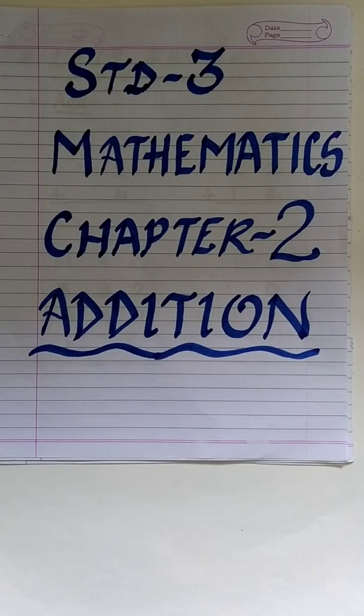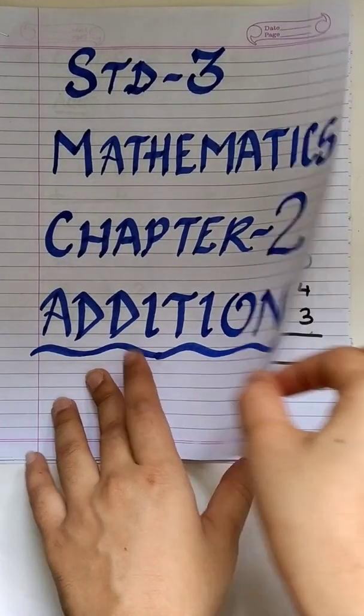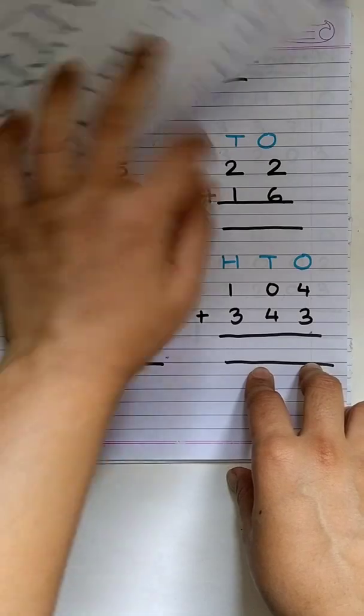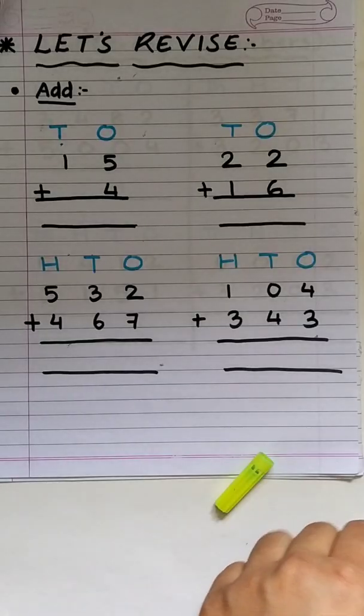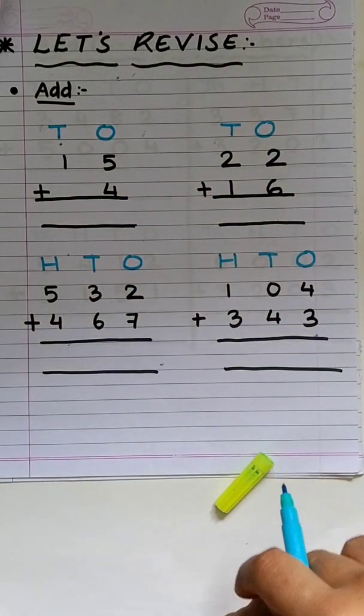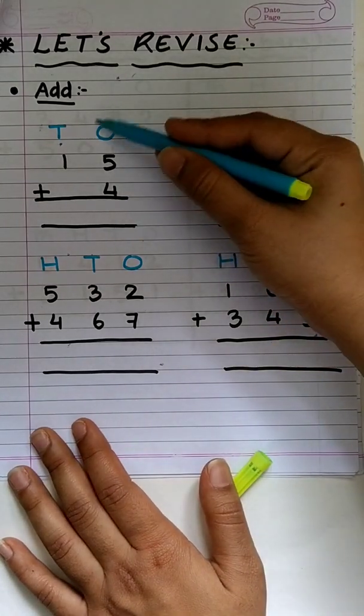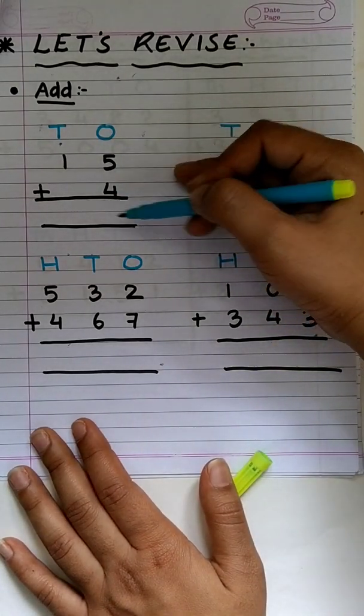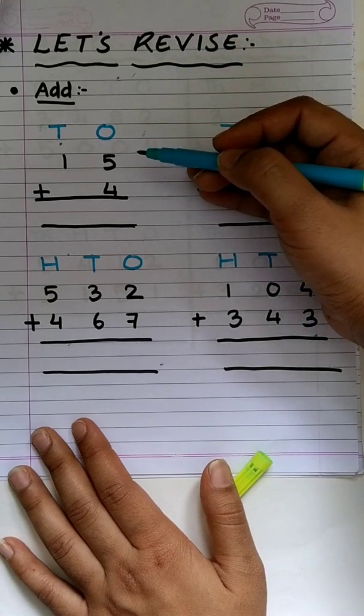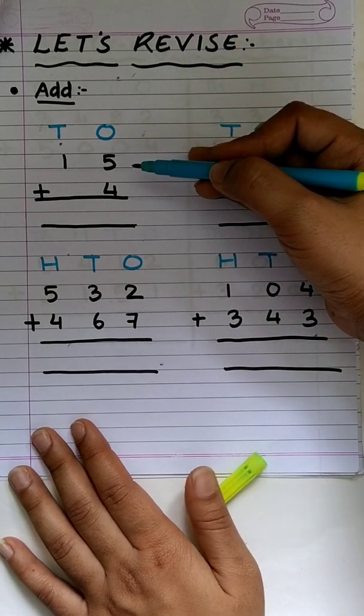You already know how to add 2 and 3 digit numbers, right? Let us revise some of them. Let us try solving the first one. While adding, add the digits on 1's place first. Now, how to add?